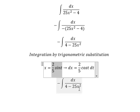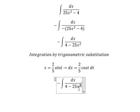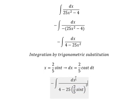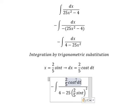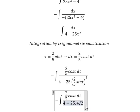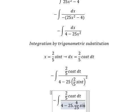So we put this one in here. dx we change for this one. So this one we got 4 over 25 sine² t.